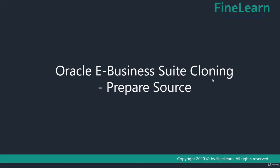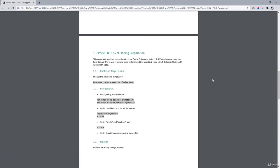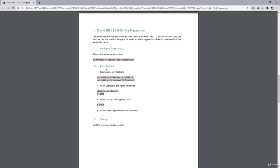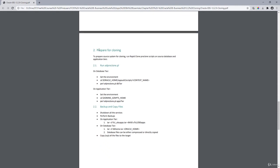In the previous lesson we saw how to prepare the target systems for cloning. Now in this lesson we're going to first run the adpreclone.pl script — the pre-clone script — to prepare the database and application tier for cloning. After that we'll take the necessary backups and copy the backup files to the target node. We'll use the activity guide as usual; in the previous lesson we used sections 1.1, 1.2, and 1.3 for configuring the host, so now we're going to use the second section: 'Prepare for cloning the source system.'